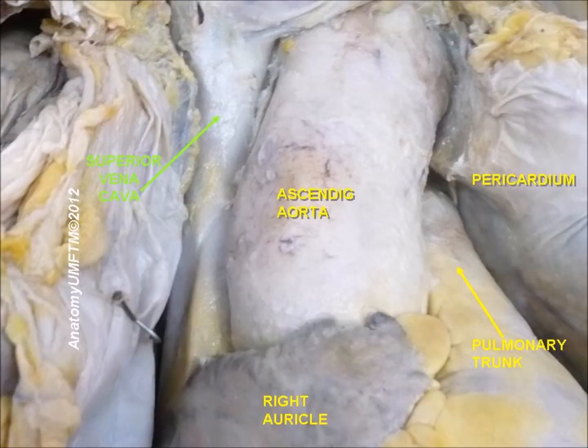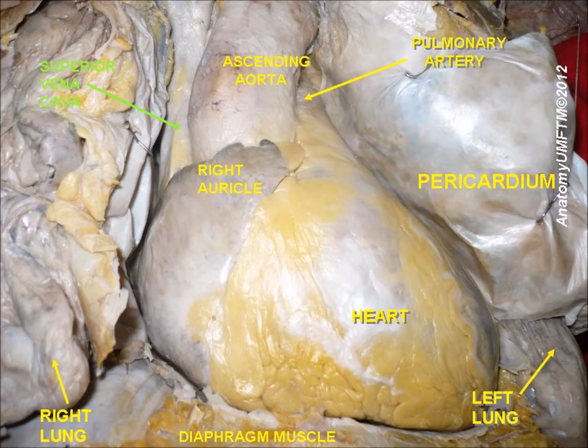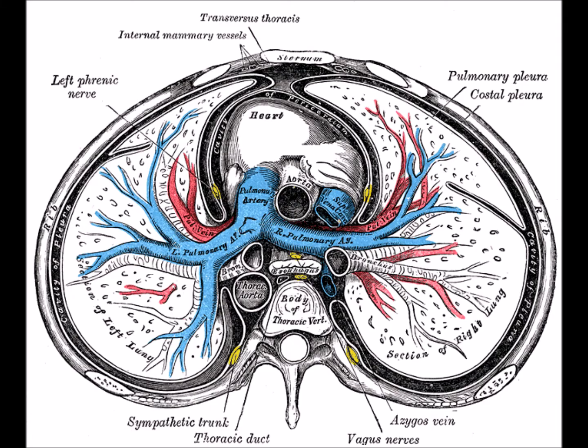Clinical Significance: Superior vena cava obstruction refers to a partial or complete obstruction of the superior vena cava, typically in the context of cancer such as a cancer of the lung, metastatic cancer, or lymphoma.